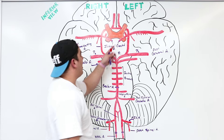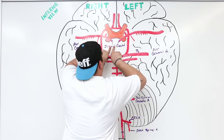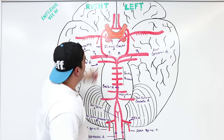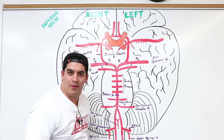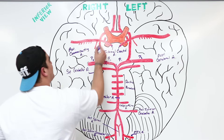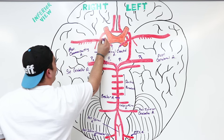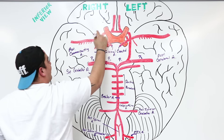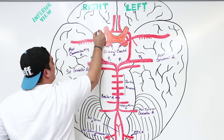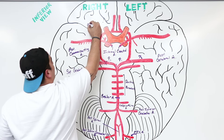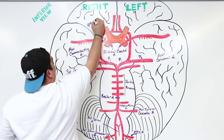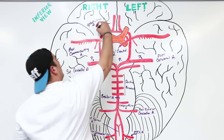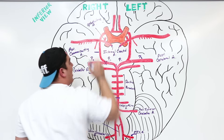As the internal carotid artery feeds into the circle, it first gives off a branch called the ophthalmic artery — an important branch supplying the eye.